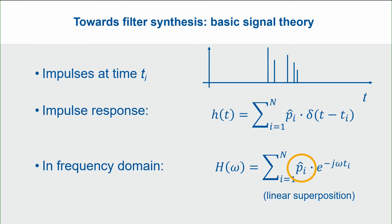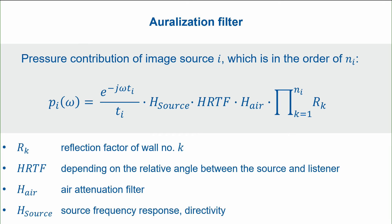Let's focus more on what is included in the sound pressure amplitude of these distinct reflections. This is a quite long equation, so let's go through it step by step. The pressure contribution of image source i, which could be of order n_i — taking fifth order as an example — contains the phase shift of this fifth-order reflection, and the travel time as it refers to spherical wave propagation, expressed as 1 over Ti.